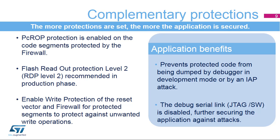Complementing the firewall protection, it is required to set the PCROP, or proprietary code readout protection, for the protected code segment in the flash memory. Setting the PCROP stops any code from being dumped by the debugger during the development phase, by external attacks, or from an IAP attack. The PCROP protection mechanism on the STM32L4 is improved over the previous STM32F2, F4, and L1 microcontrollers. STM32L4 microcontrollers make it possible to define start and end regions, and there is an option byte which allows a mass erase operation but keeps the PCROP segment protected.